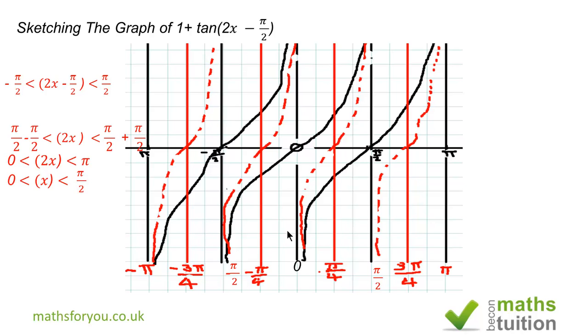If we now divide each term by 2, we have that x is greater than 0 and x is less than π/2, which suggests that we've got a cycle of π/2. And that's what I've got here.